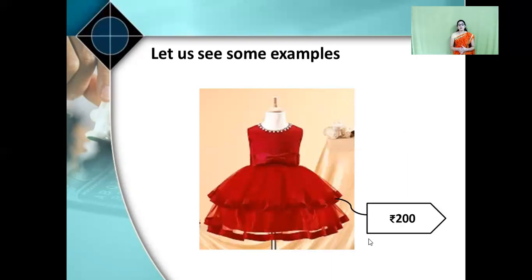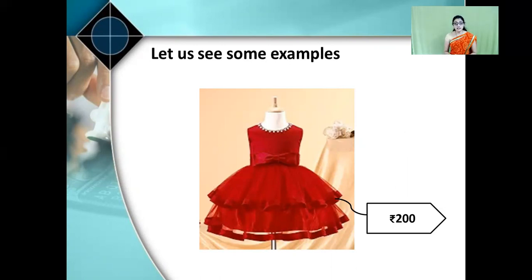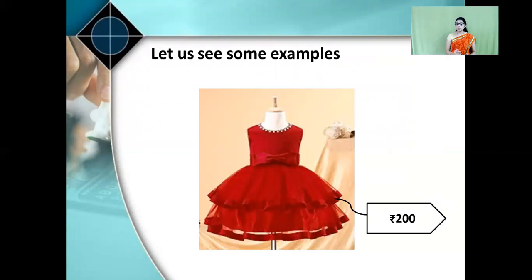See — a beautiful frock. If you go to the market, you can see frocks like this in a shop, and there is a tag on it. Rupees 200 — what is this rupees 200? This rupees 200 is the price, the value of that frock. If you give rupees 200 to the shopkeeper, then only will the shopkeeper give you that frock. This rupees 200 tag is the price of that frock.